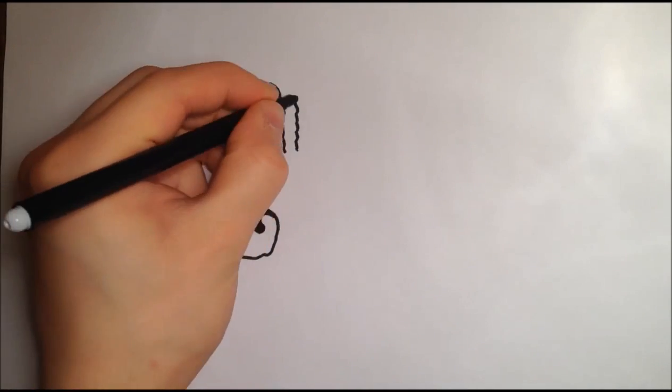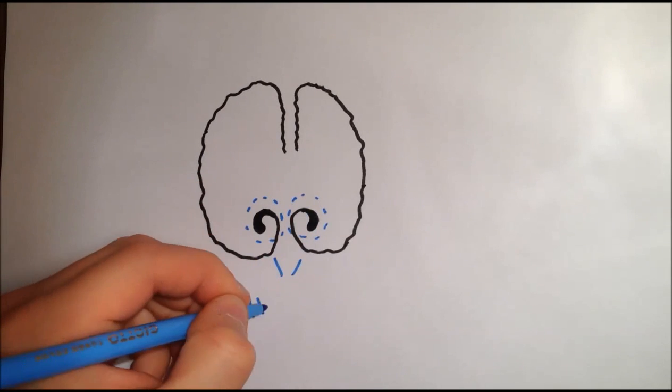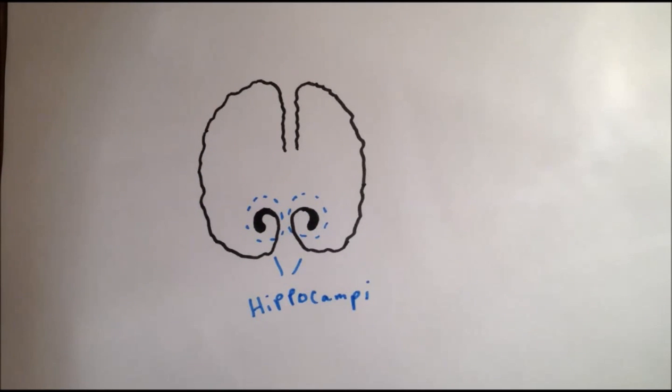The hippocampus is an elaboration of the edge of the medial temporal cortex. It is a paired structure, with one being found in each hemisphere of the brain.